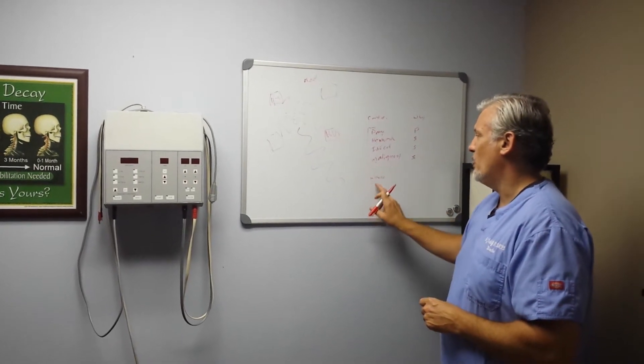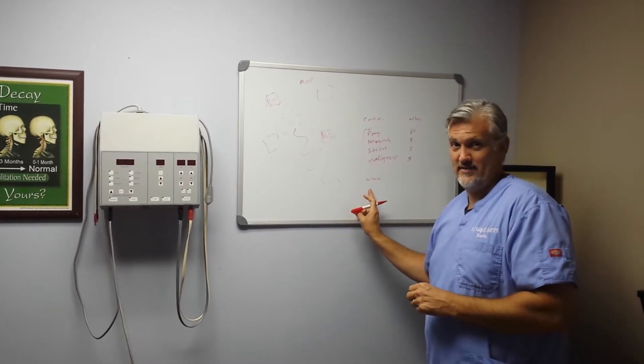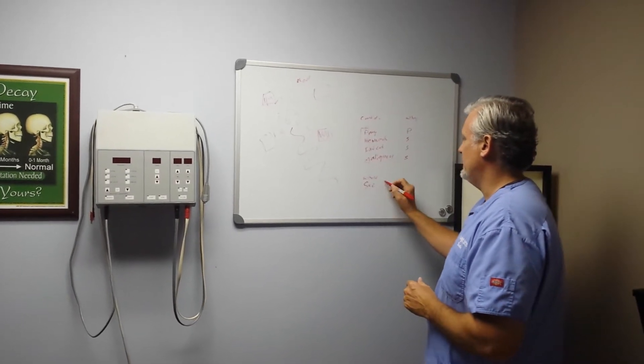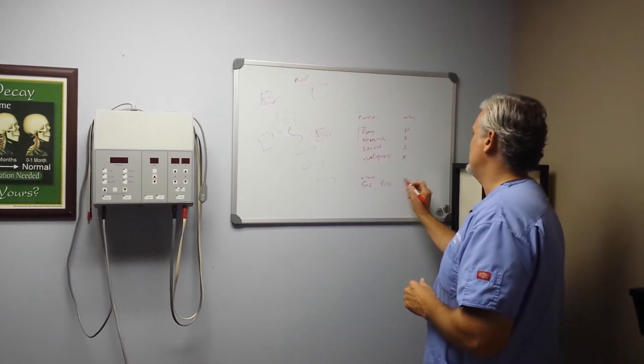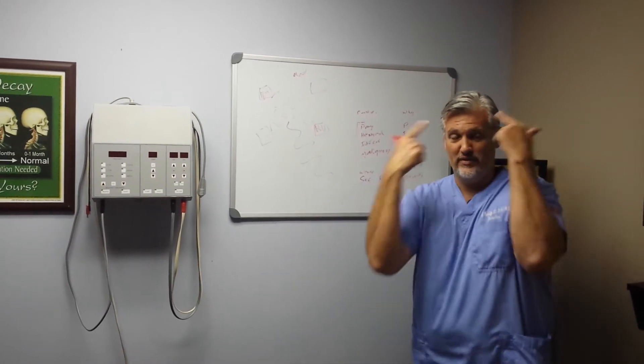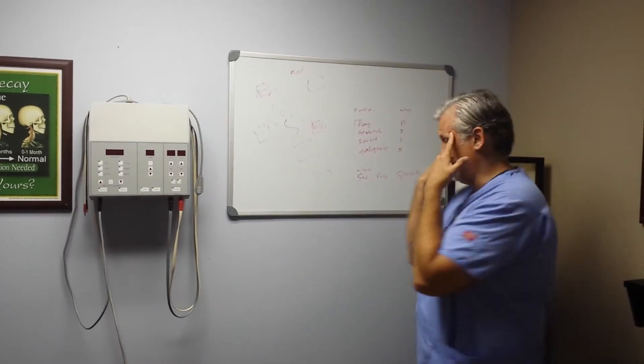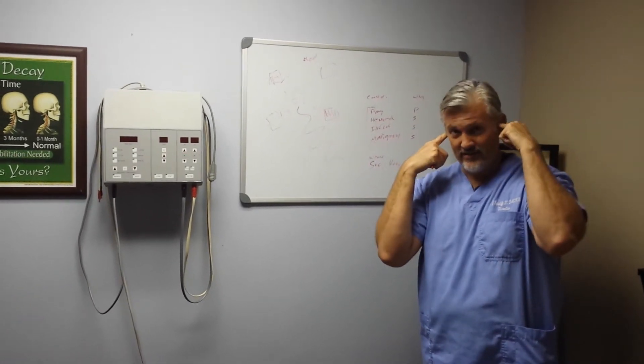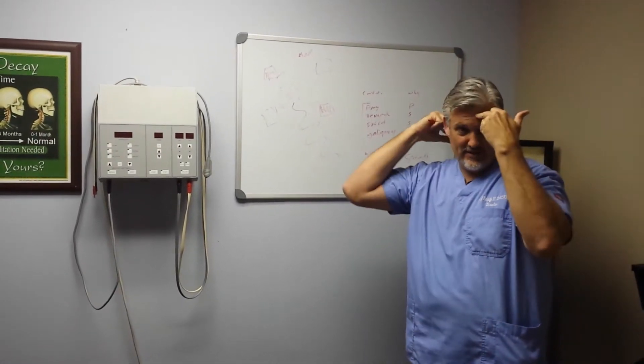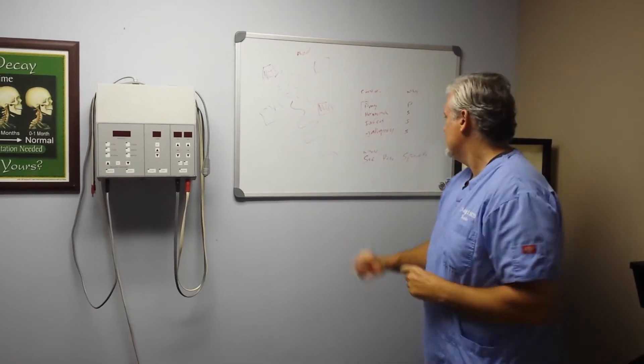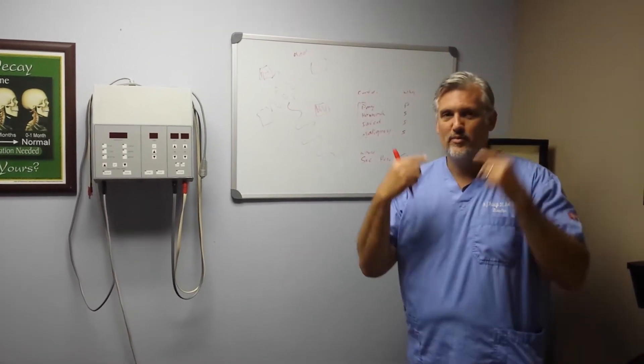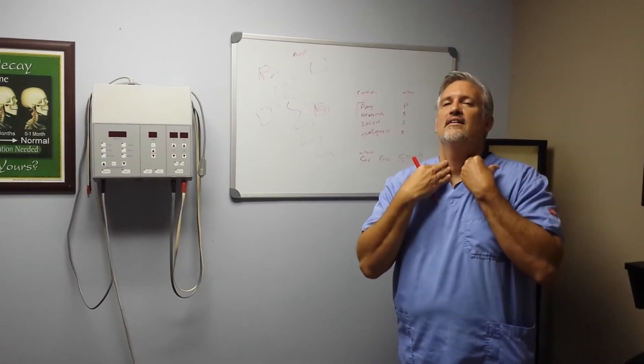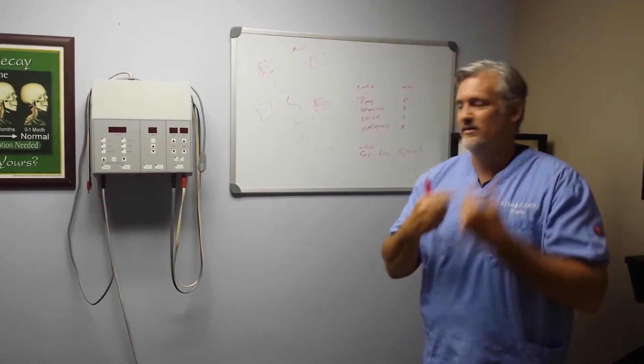We also need to know where not to put this. We use the acronym see no evil, hear no evil, and speak no evil. We don't put it on our eyes, see no evil. We don't do it transcranially, hear no evil. It could also be front to back, we wouldn't do that either. And speak no evil, we don't put it on the front of the neck, near the carotid sinuses.